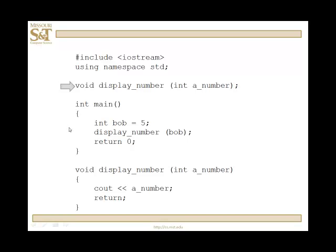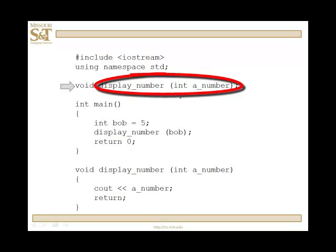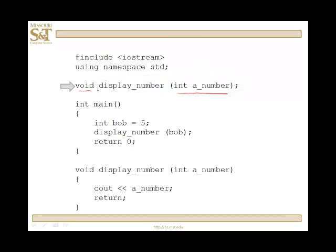Let's look at another example — a little more complex. In this case, the function displayNumber has a parameter, so we're going to have to send something to fill that parameter. But it's a void function — it returns nothing back. During the compile stage, displayNumber goes on the function table. We have a declaration for that function, and it has a parameter.